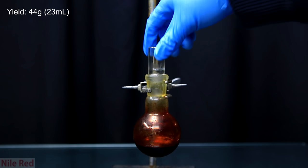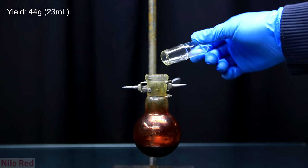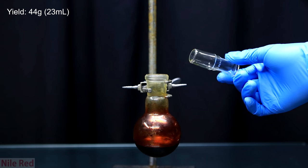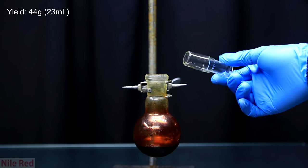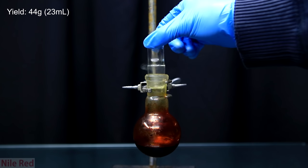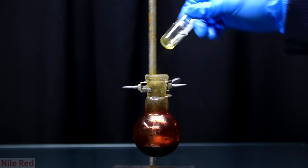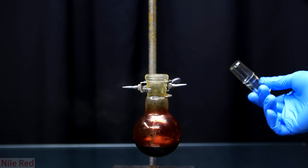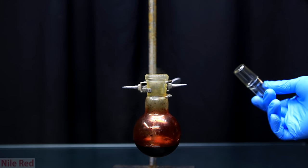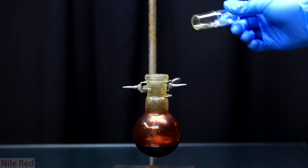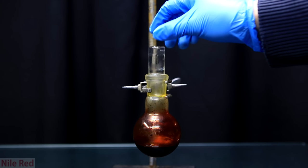So here we have our yield of chromal chloride, which is about 44 grams. It's pretty dense, almost twice as dense as water, so it's only around 23 milliliters. You can see here that when the stopper is removed, it fumes quite a bit. The fuming that you see is when it reacts with moisture in the air to produce hydrochloric acid.